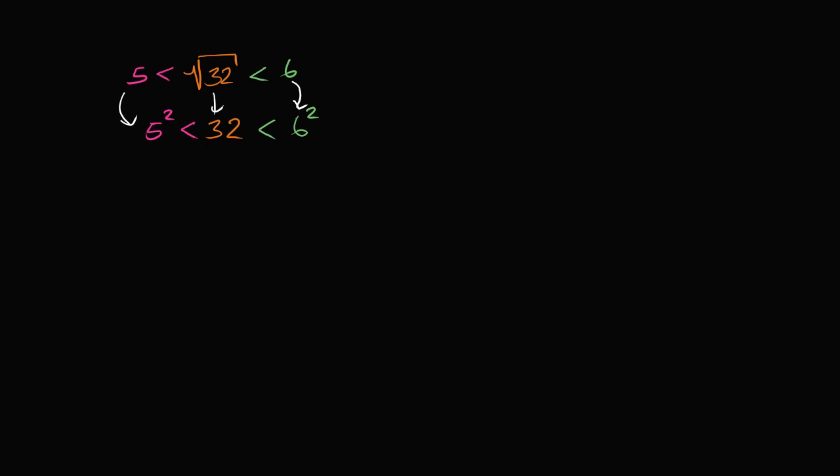Let's say we wanted to estimate, between what two integers is the square root of 55? Well, we can do the same idea. Let's square it. So if we square the square root of 55, we're just going to get to 55. And say, well, okay, 55 is between which two perfect squares? The greatest perfect square that is less than 55.